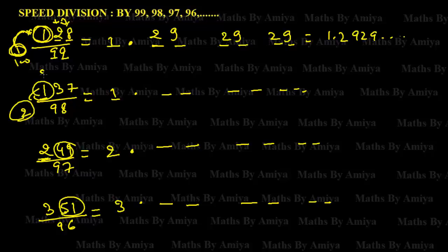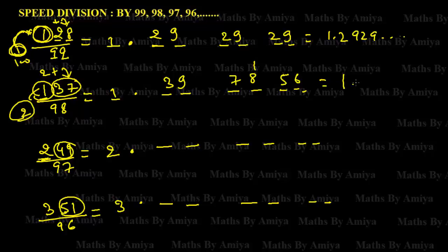For 237 divided by 98: the gap between 100 and 98 is 2. Multiply 2 × extra digit 2 = 4, then add the last two digits 37: 37 + 4 = 39 (actually 2 × 2 = 4 not matching — gap 2 × extra digit 2 = 4 + 37 = 41... per transcript: 2 × extra 2 plus 37 = 39). Gap is 2, so 39 × 2 = 78, then 78 × 2 = 156. The first four decimal digits are 1.3979...